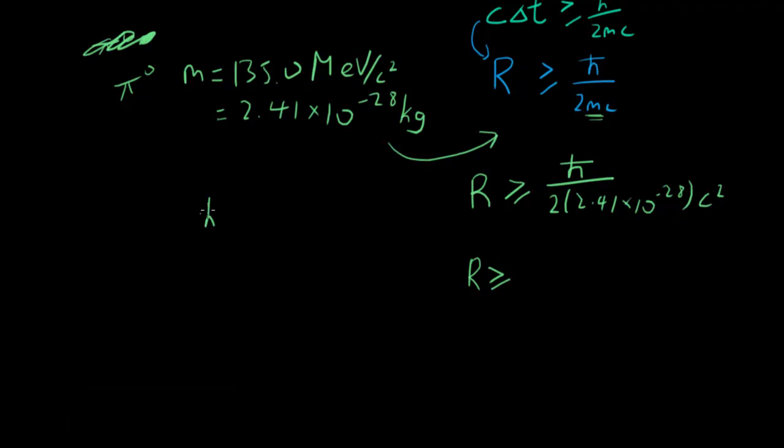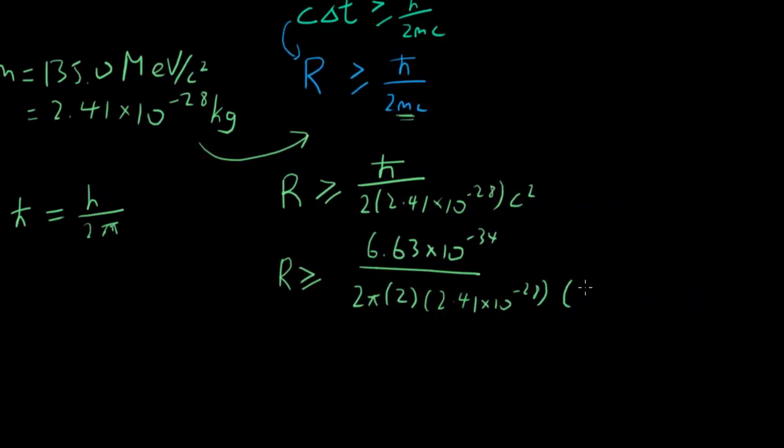ℏ is basically h over 2π. So we have 6.63 × 10⁻³⁴ over 2π times 2 times 2.41 × 10⁻²⁸ times 3.00 × 10⁸. And if I did my math correctly, the range is about 0.73 × 10⁻¹⁵ meters.